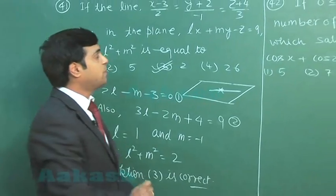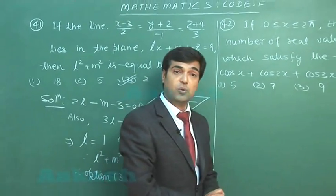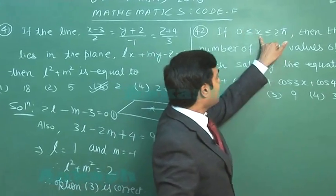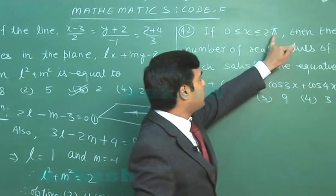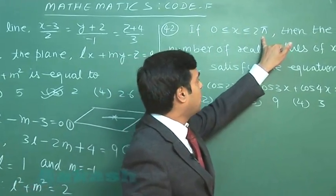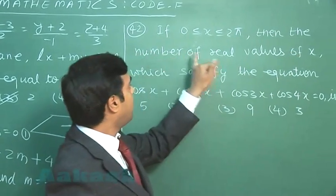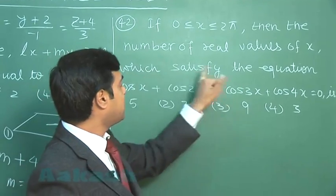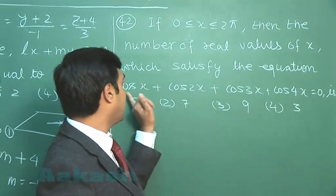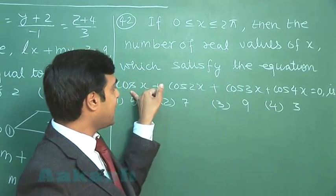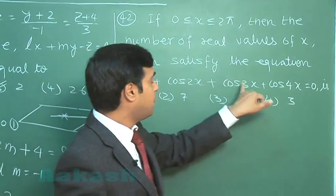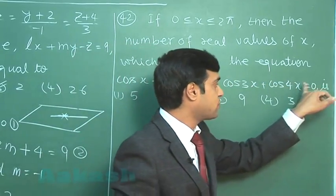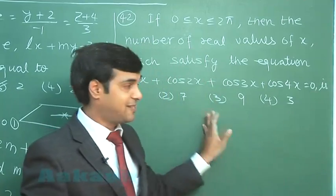Let us move to question 42 from trigonometry. If x lies in [0, 2π] including endpoints, find the number of real values of x which satisfy the equation cos x plus cos 2x plus cos 3x plus cos 4x equals 0.